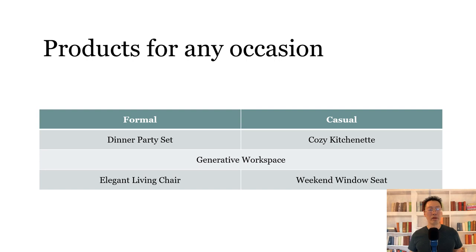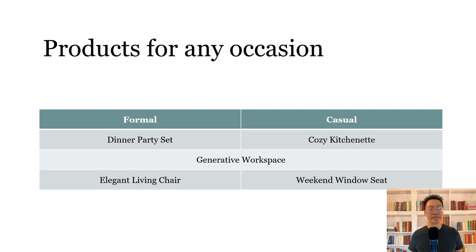In a table with a merged cell in row three, the screen reader reads: 'Generative workspace. Column header formal. Row three of four. Column one of two. Merged cell spans two columns.' It tells you it's a merged cell, but only reads the 'formal' column header — not 'casual' — so the information that it spans both categories isn't clearly conveyed. Tables are already complex structures, and merged cells make them even more complex. Consider using a simpler structure without merged cells.